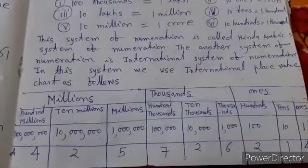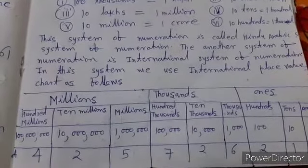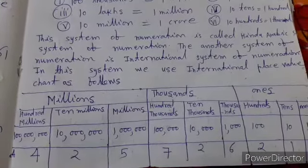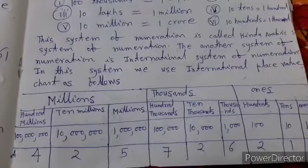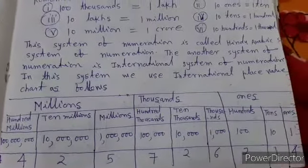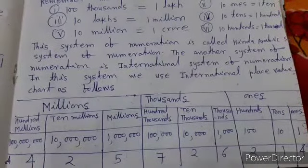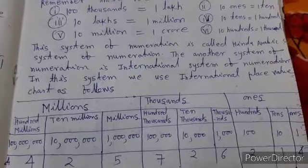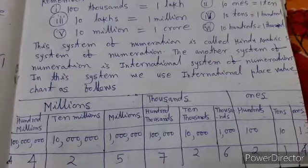For example, we have placed 425,726,214 in the periods of millions, thousands and ones in the international system.